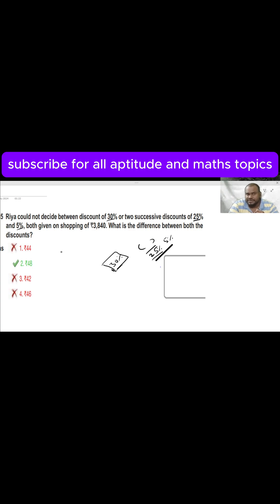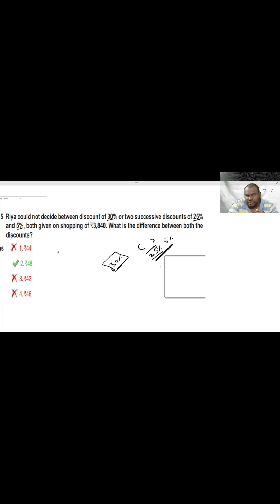So in the previous classes we discussed a formula: successive discounts x plus y plus x into y by 100. Successive increase, this formula is for successive increments. For a rectangle if the area is L into B, if L increases with x percent and B increases with y percent, then what would be the resultant increase in its area? For that, formula is x plus y plus x into y by 100.